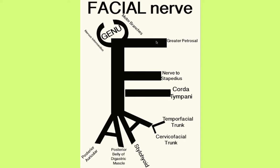So if you just maybe get out a pencil and write yourself: write an F and then an A down at the bottom, and then a C up here, and then an I here, and another A here, and then an L here. And you'll have accounted for all the branches.